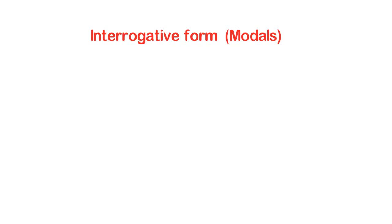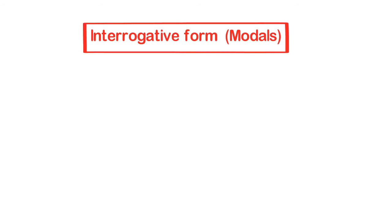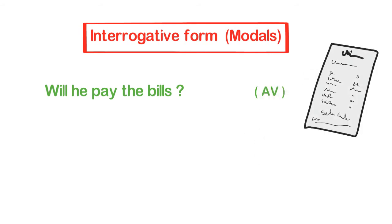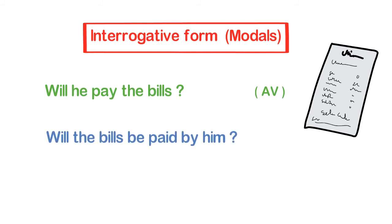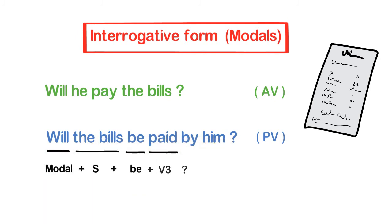And finally, for changing an interrogative sentence with a modal verb, use this structure. 'Will he pay the bills?' is an active sentence. Converting it to passive voice, it becomes: 'Will the bills be paid by him?' Structure: modal + subject + be + past participle.